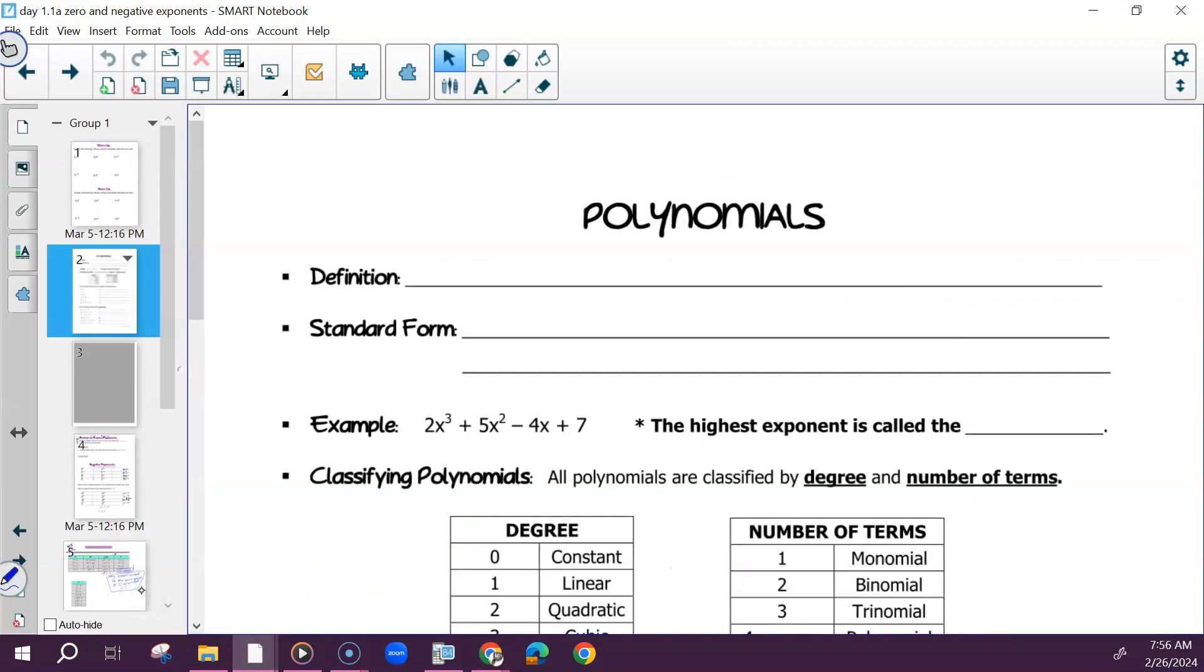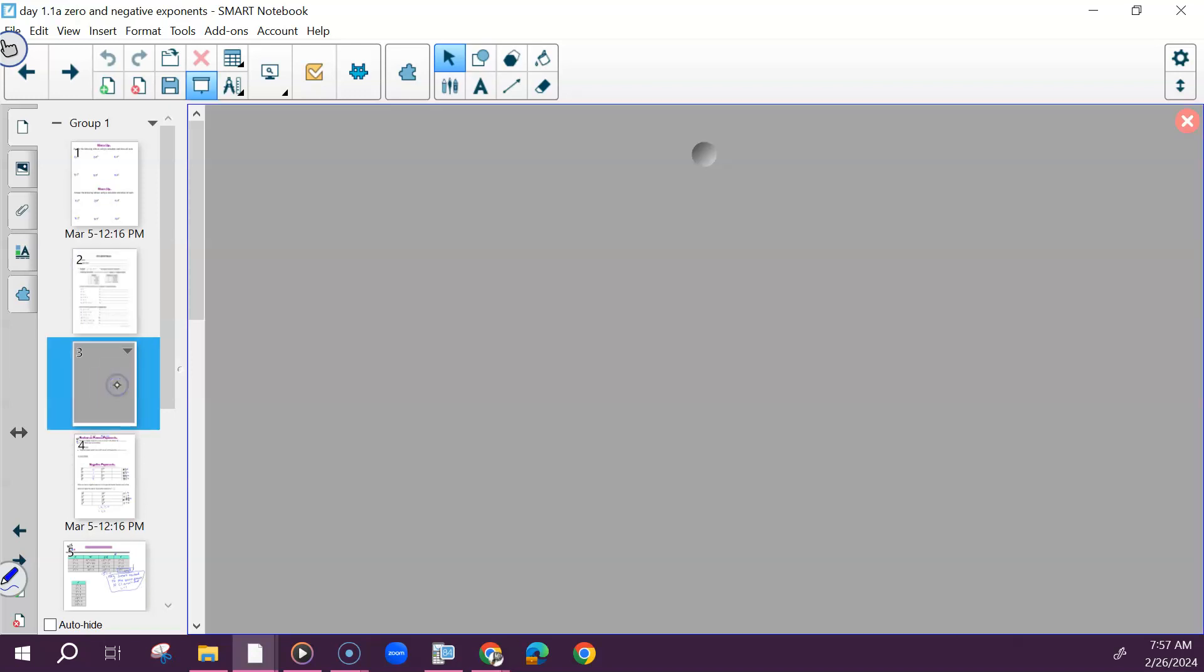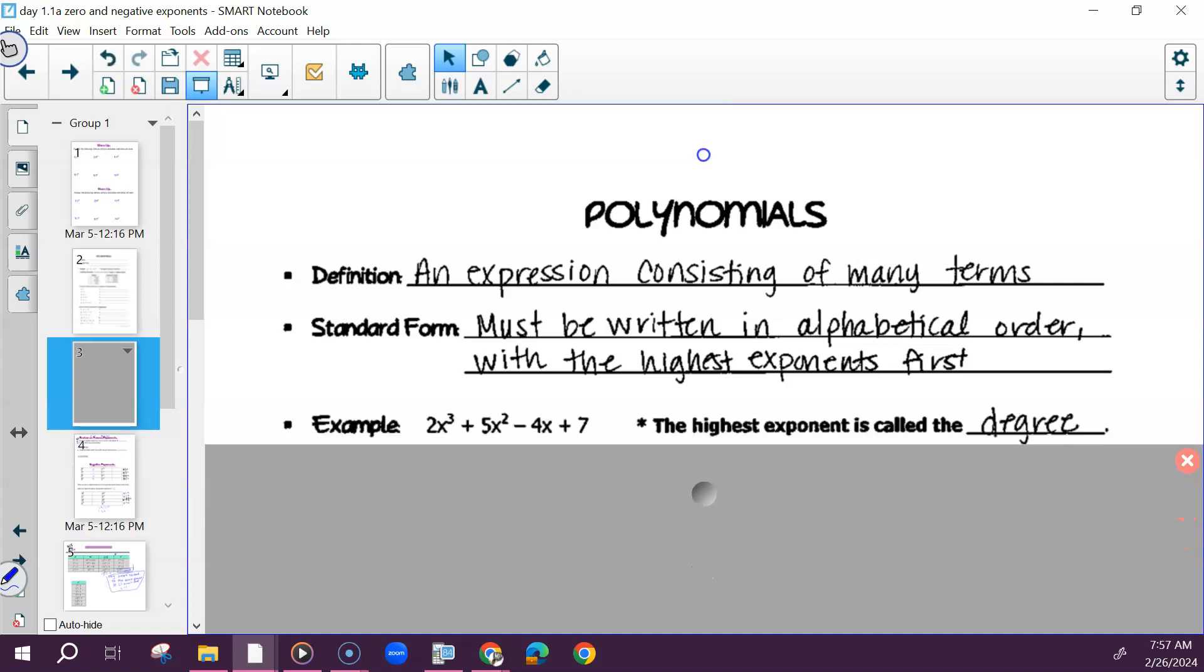Everyone should have notes that look like this. Some of this may be review for you, but I'm going to go ahead and write this definition. Polynomial is an expression consisting of many terms. This is the overall umbrella term polynomial. And when we deal with polynomials, they have to be written in standard form. So they have to be written in ABC order with the highest exponents first. We're going to talk about how to do that. You will need to know how to do this, how to put them in standard form, as well as the number of terms, what those are called, as well as the different degrees. The highest exponent is called the degree.